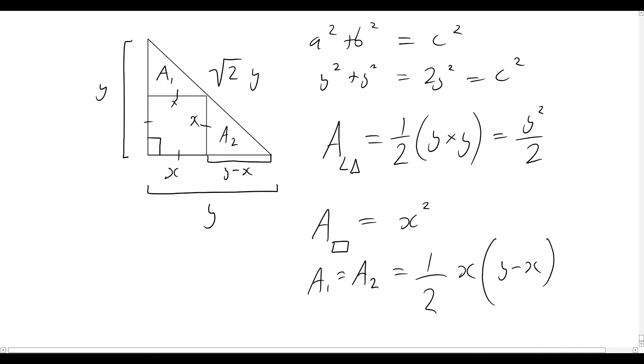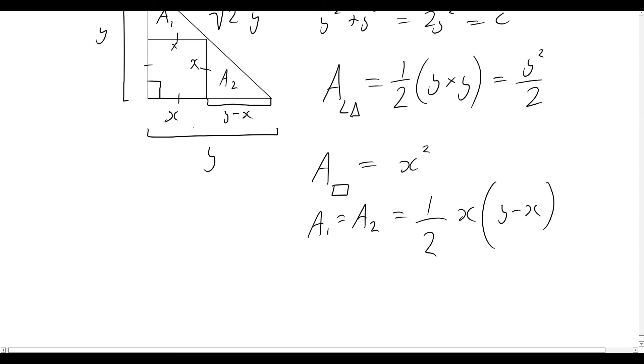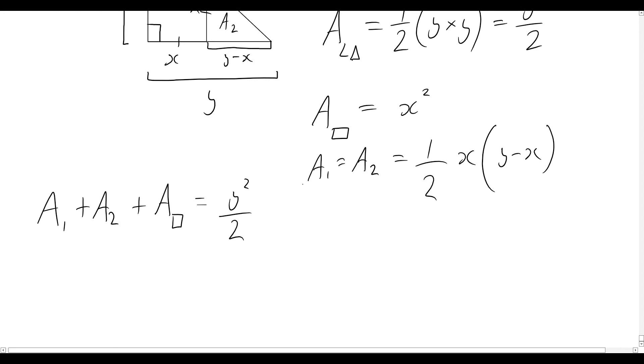Okay, so now we've figured out that A₁ equals A₂, and we also know the area of the square. So we also know that they all must add up to give us y²/2. So what we can say now is that A₁ + A₂ + A_square is equal to y²/2. Okay, so equivalently to saying A₁ + A₂, I can just say 2 times A₁. So I might go ahead and do that. So I'll just write 2A₁ + A_square = y²/2.